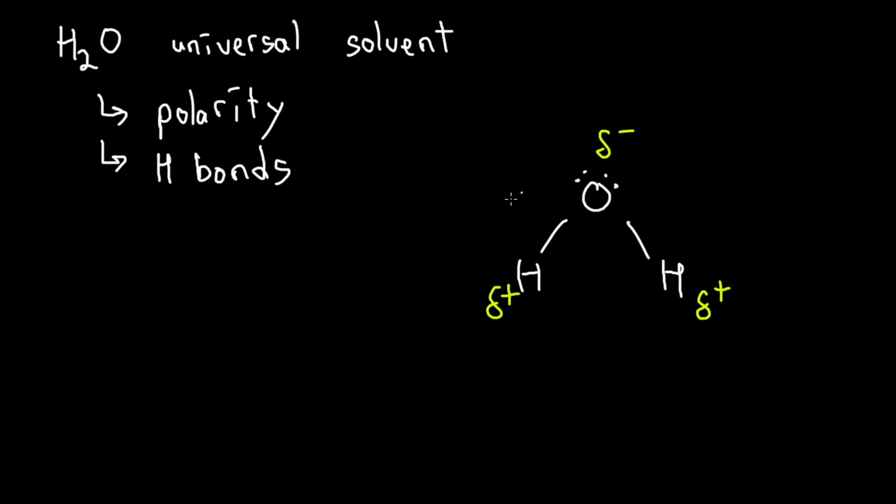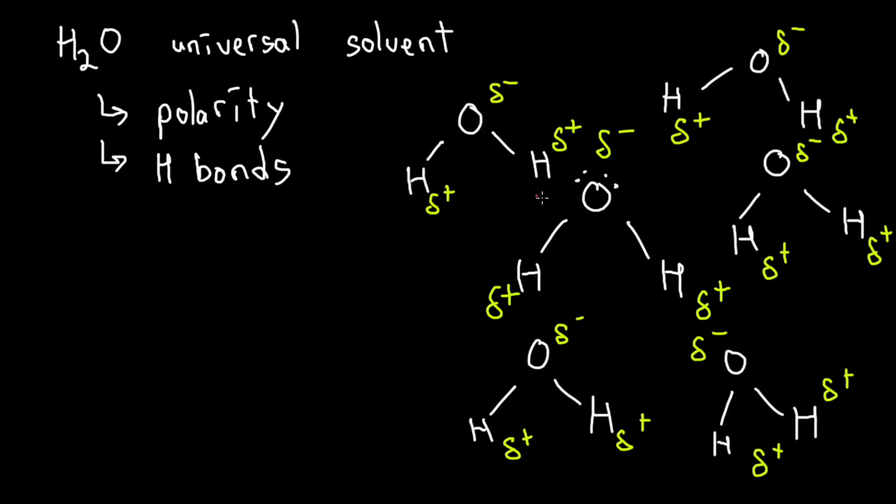If we have multiple water molecules together, as we would in a regular cup of water, we would form plenty of hydrogen bonds between them. These hydrogen bonds are responsible for the majority of breaking down and dissolving, which is why water is such a good universal solvent. All of these bonds that I have highlighted with red dots are formed due to hydrogen bonds. Remember, hydrogen bonds are between FON atoms: fluorine, oxygen, and nitrogen. Here we have oxygen bonded to hydrogen, forming plenty of hydrogen bonds.